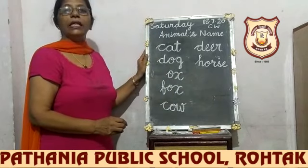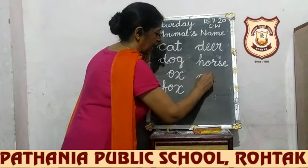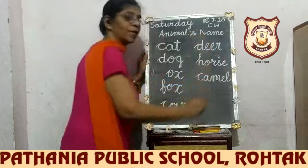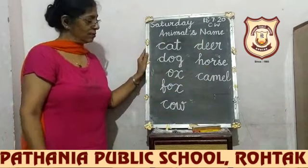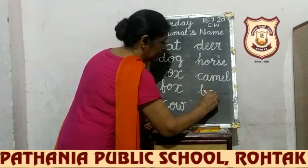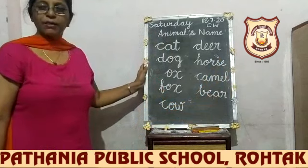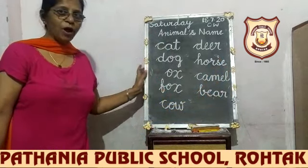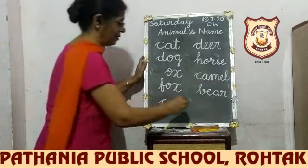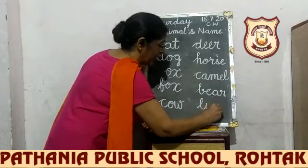Next is camel. Camel. And now bear. Bear. And one more is left — what is this? Lion. Lion — L, I, O, N. Lion.